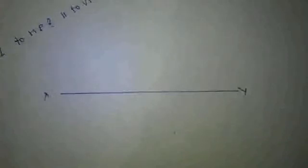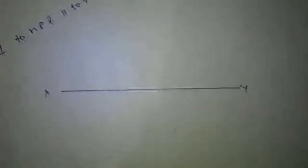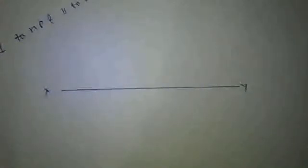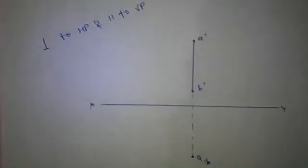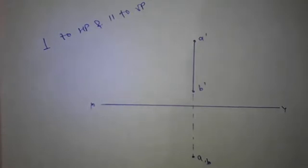For the first case, when the line is perpendicular to HP and parallel to VP, we see the true length in the front view, so we draw the front view first. In this view we are seeing the true length, so we have drawn the front view first, and then the top view. When we see that line from the top, we will see only a point, so we have written A comma B.